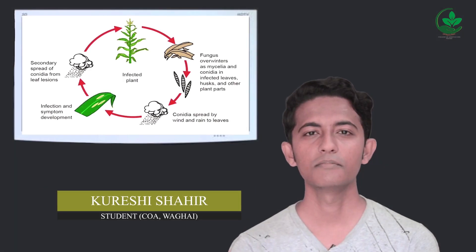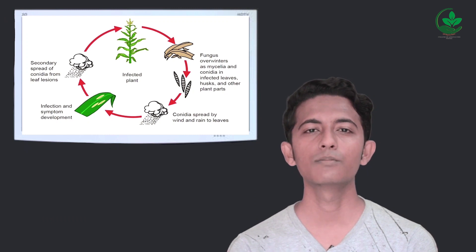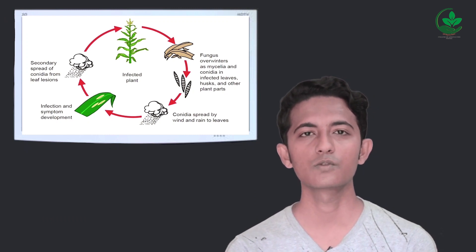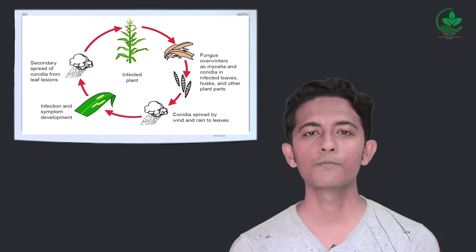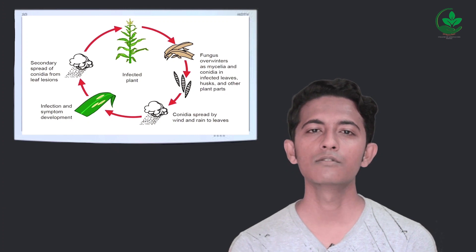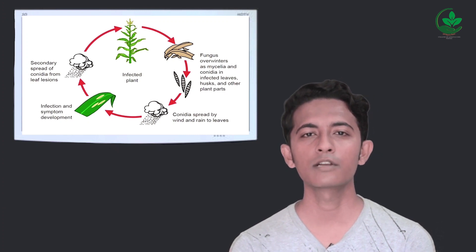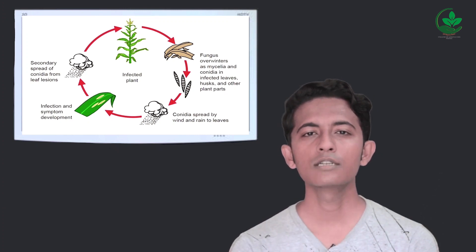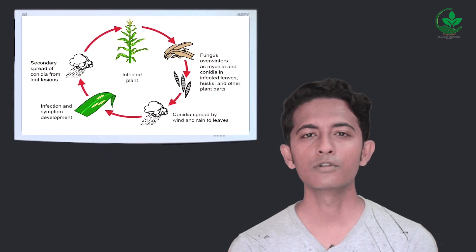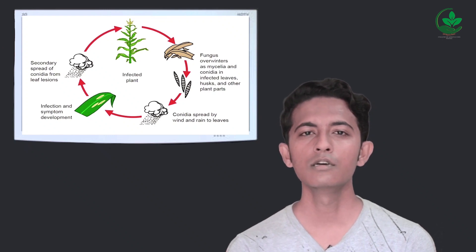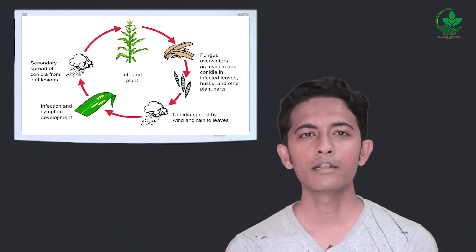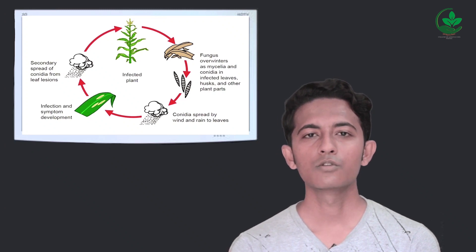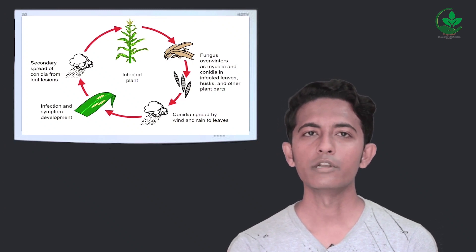Hello everyone, myself Shair Qureshi. Today I will tell you about the disease cycle of Tersicum leaf blight of sorghum. The mycelium and conidia of the pathogen can survive in the soil and in infected plant debris for a long period of time. The pathogen is also seed-borne, and this seed-borne inoculum causes seed rot and seedling blight. Secondary spread is mostly through wind-borne conidia.